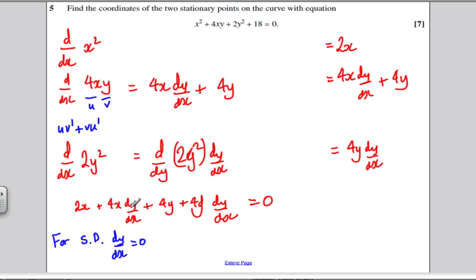And, at this point, I wouldn't rearrange and make dy by dx the subject. Use the fact that dy by dx is 0, which means this whole thing will be 0, this whole expression will be 0. And you simply get that 2x plus 4y is 0.